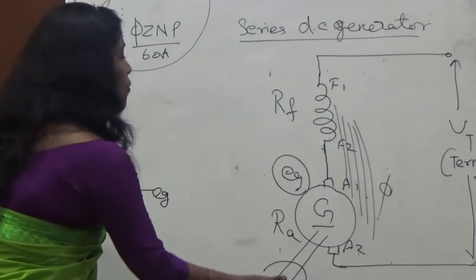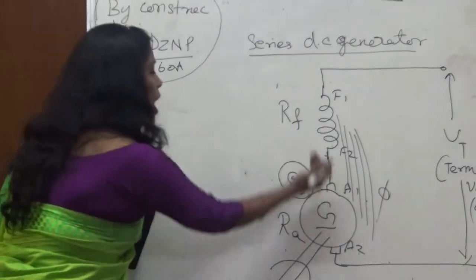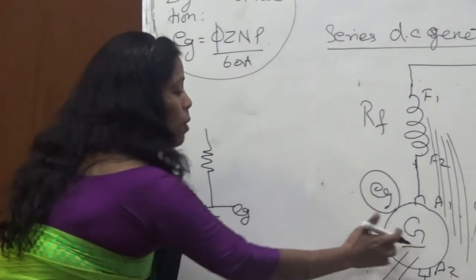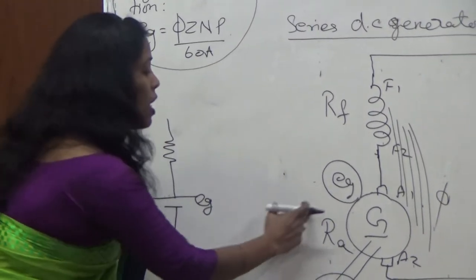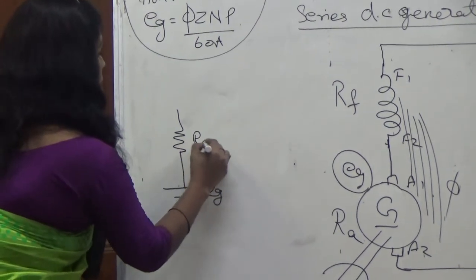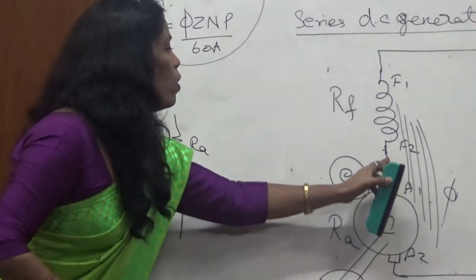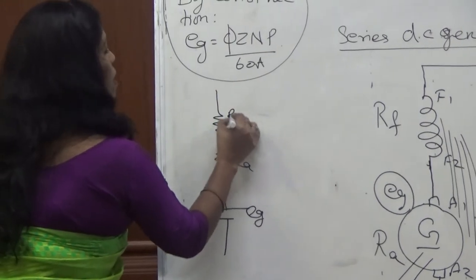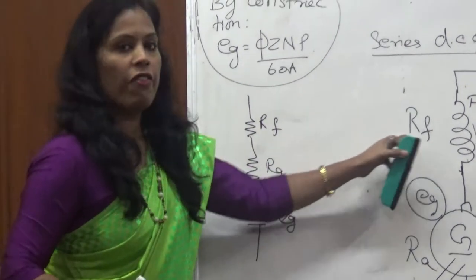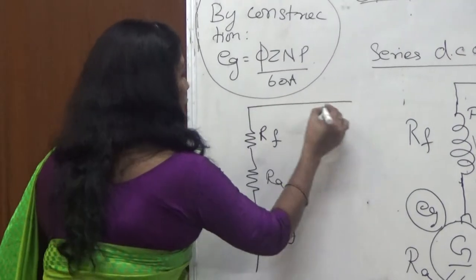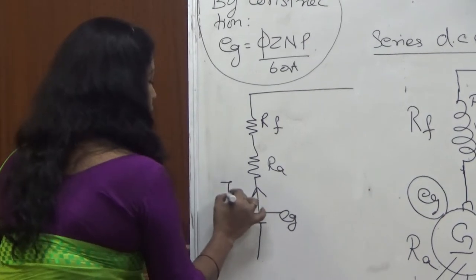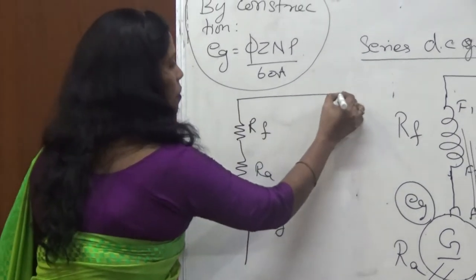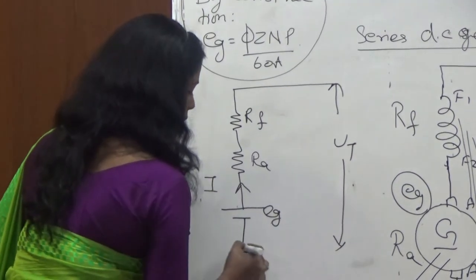Now when the current flows, where is it flowing? From the armature, from this battery. First it will go to the armature, so this armature has resistance, that is RA. And the same current flows to the field also. That same current is flowing in the field resistance also, RF. Then that same current—we can say this current goes to RA, that current goes to RF, now you get an output VT.